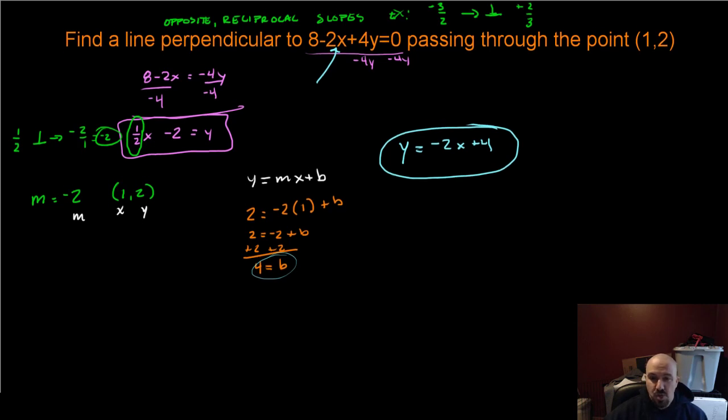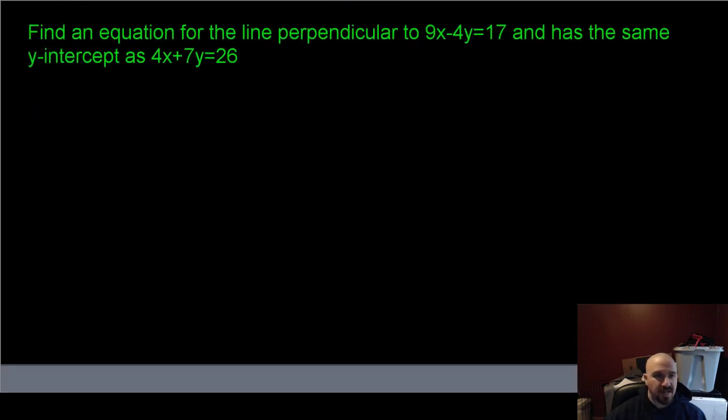All right, moving on. This is our last one and our hardest one. It says find an equation for the line perpendicular to 9x - 4y = 17 and that has the same y-intercept as 2x + 7y = 26. So we're not given a point specifically. We're just simply saying it has the same y-intercept as that second equation. The first thing we need to do is find a slope.